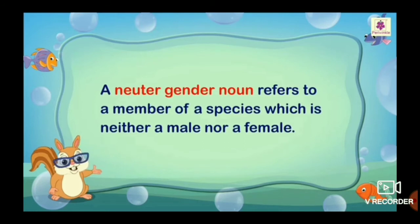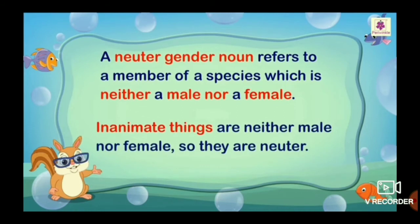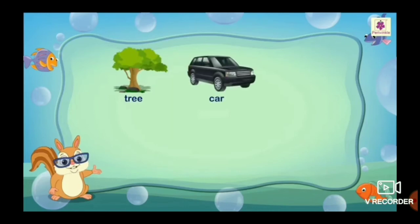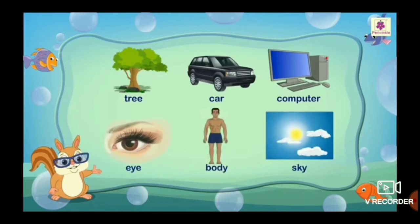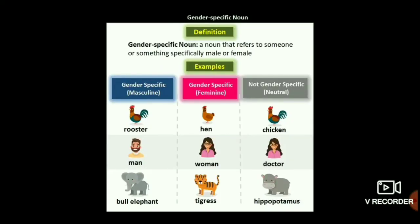A neuter gender noun refers to a member of a species which is neither male nor female. So they are neuter. For example: tree, car, computer, eye, body, sky. Children, a few more examples of gender nouns.